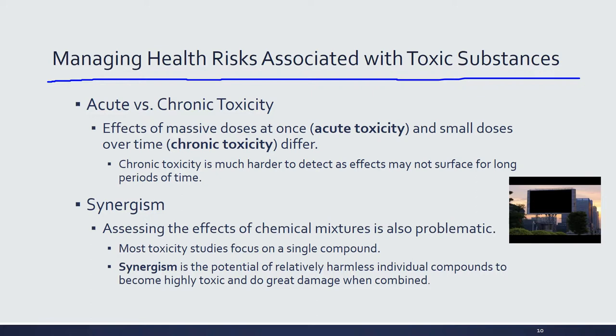How do we manage health risks associated with toxic substances? When we look at risks, we can look at what's called acute or chronic risk. Generally, when a harmful material comes in contact with you, does it have an immediate effect? That's called acute. Does it have a chronic, meaning long-term, effect? Usually large exposures can have an acute effect, and small doses over time can have a chronic effect. But there are some things that just naturally cause a chronic effect regardless of dose size.